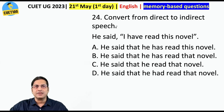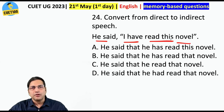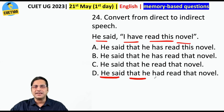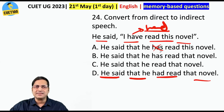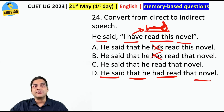Convert from direct to indirect speech again. 'He said, I have read this novel.' It means when he said it, he had already read that novel. So: 'He said that he had read the novel.' This 'have' will certainly become 'had.' The option 'he said that he read that novel' means he used to read it — so that also cannot be the answer. The correct answer is 'he said that he had read the novel.'